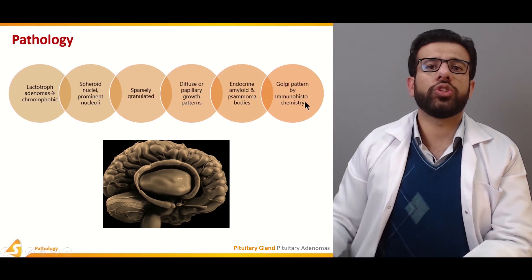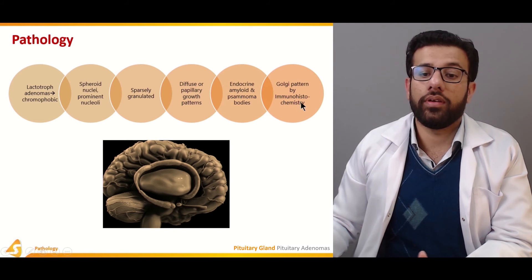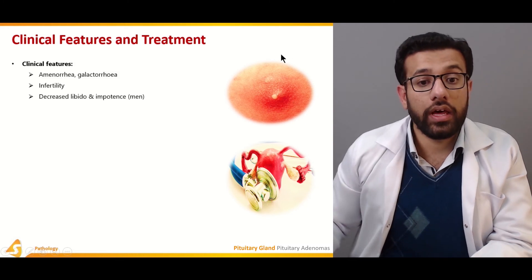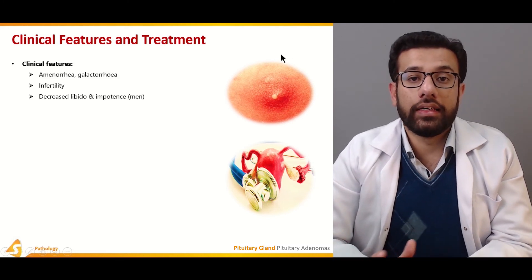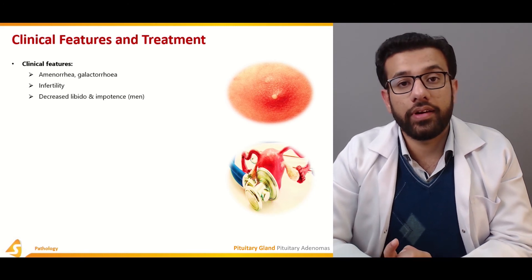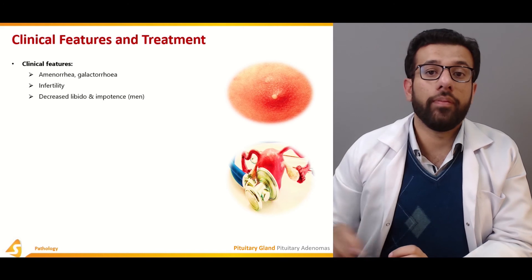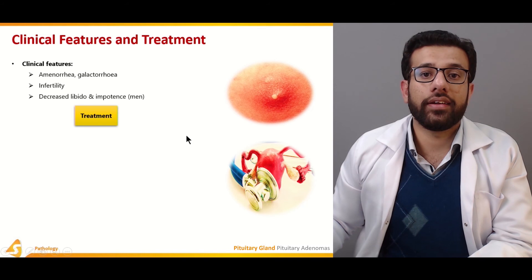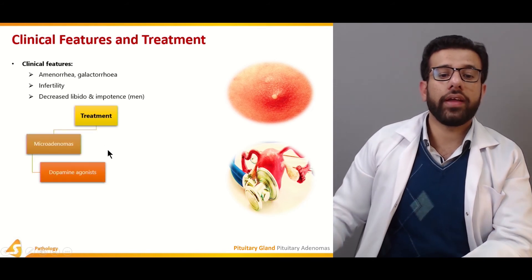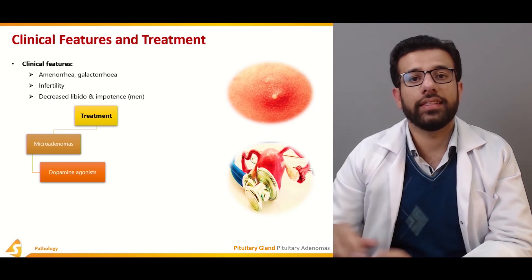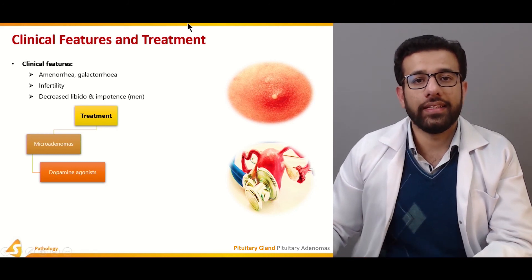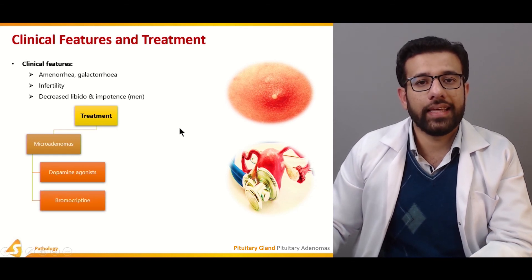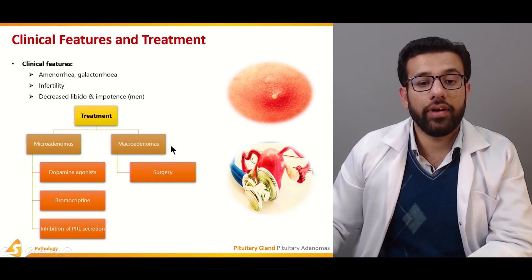The Golgi pattern can be studied by immunohistochemistry or other assays. Clinical features of prolactinoma include amenorrhea, galactorrhea, infertility, decreased libido, impotence, delayed puberty, and delayed secondary sex characteristics. Treatment of microadenomas involves dopamine agonists, which facilitate dopamine release. Bromocriptine is an example of such a drug.